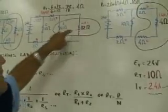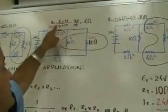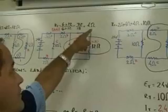We have 6 and 12. It's going to be 6 times 12 over 6 plus 12. That's 72 over 18, which is 4 Ohms.